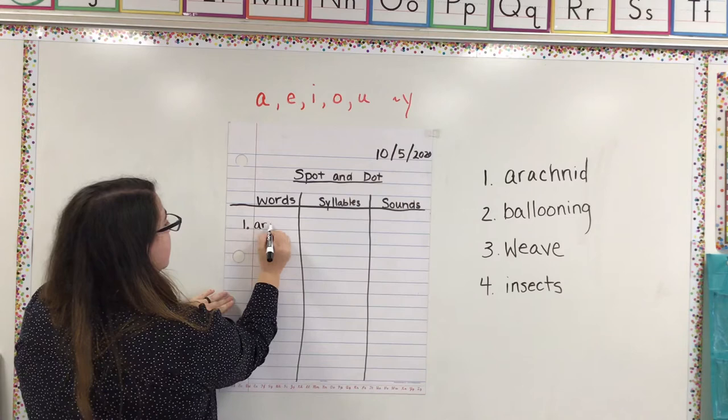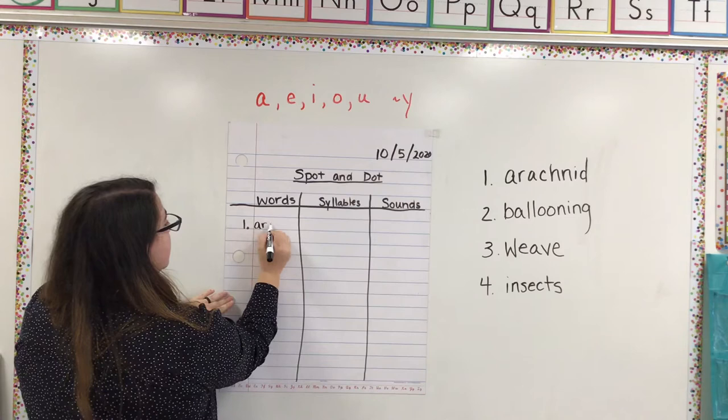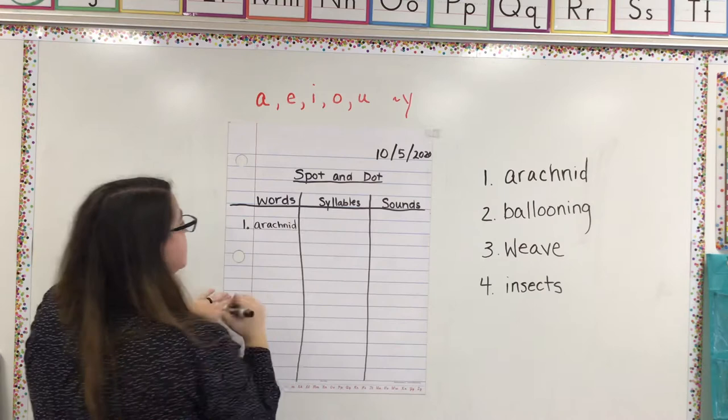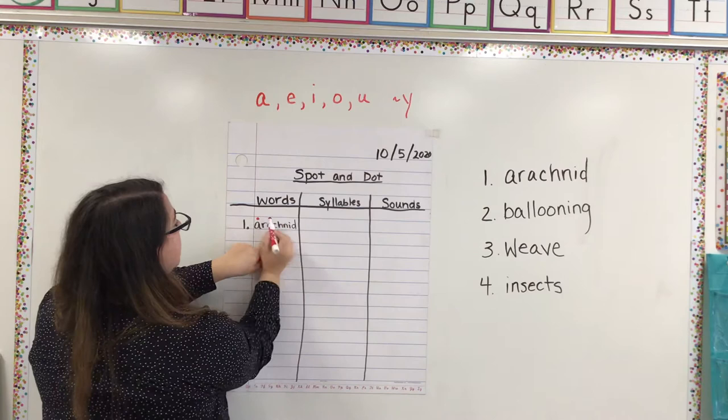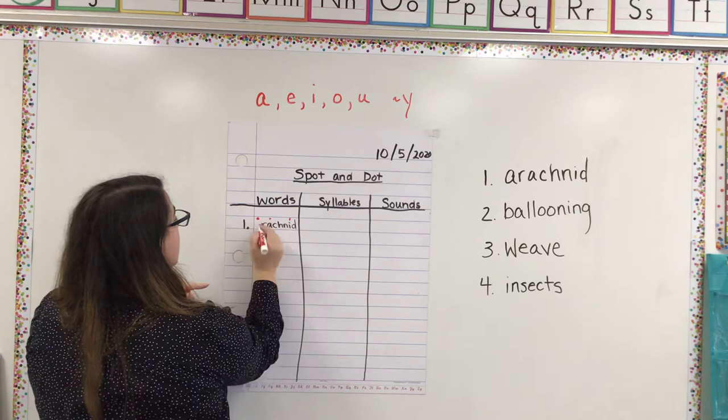So I'm going to look over here, and I see our first word is arachnid. Make sure I've got plenty of space. And now the first thing that we're going to do is spot the vowels and dot the vowels. So I see I've got 1 here, here, and here.